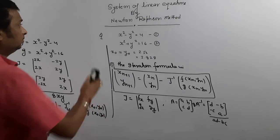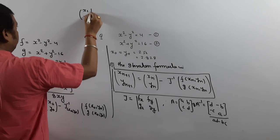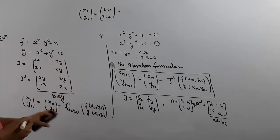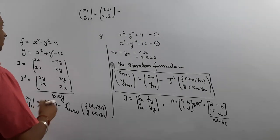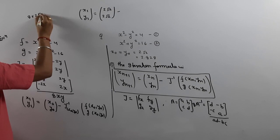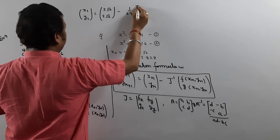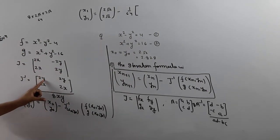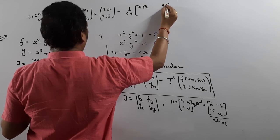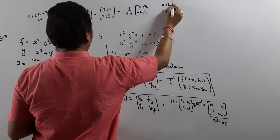So, x1, y1 equals [2√2, 2√2] minus J inverse at (2√2, 2√2). J inverse has denominator 8xy = 8 × 2√2 × 2√2 = 64. So it is minus 1 upon 64. When you put y = 2√2 into the Jacobian matrix entries, the values become 4√2. The Jacobian matrix entries are: 4√2, 4√2; 4√2, -4√2, multiplied by the function values.